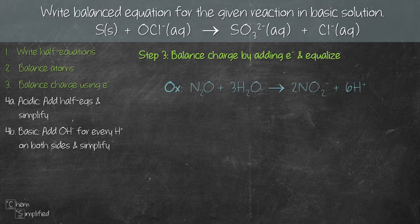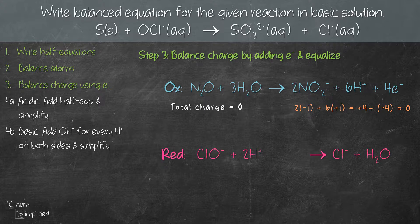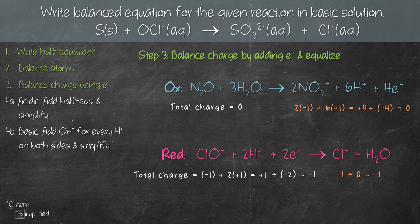Moving on to step 3, we need to balance the charge by adding electrons. From the oxidation equation, the total charge on the left hand side is 0 because N₂O and H₂O are both neutral compounds. On the right hand side we have 2 times -1 from NO₂⁻ and 6H⁺, giving a total charge of +4. So we add 4 electrons on the right hand side to balance. For the reduction equation, the left hand side has a total charge of +1 and the right hand side has a total charge of -1, so we add 2 electrons, giving -1 on both sides.